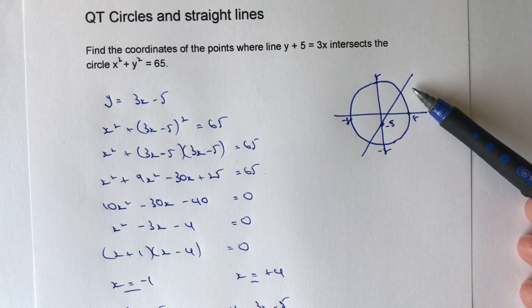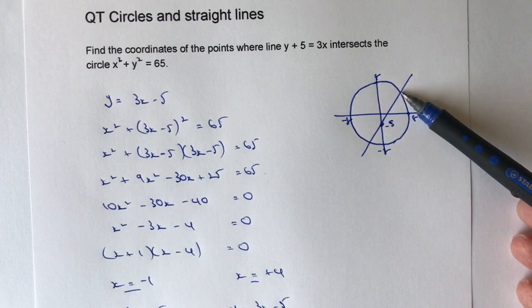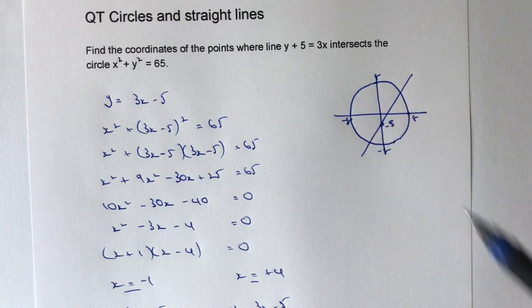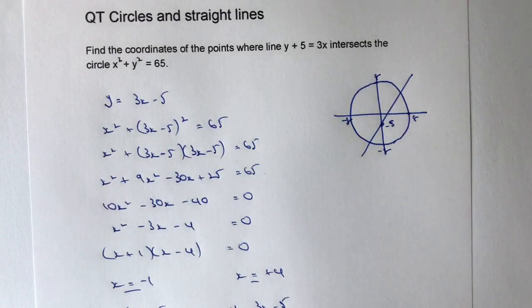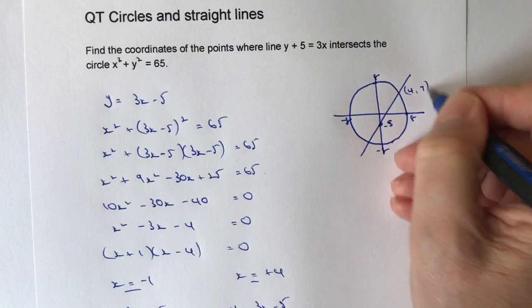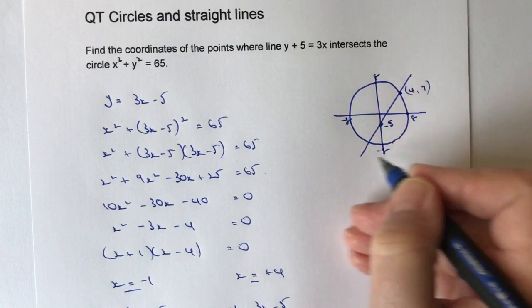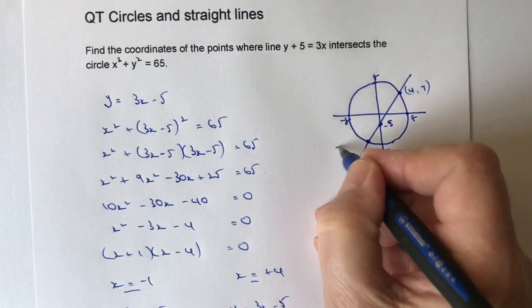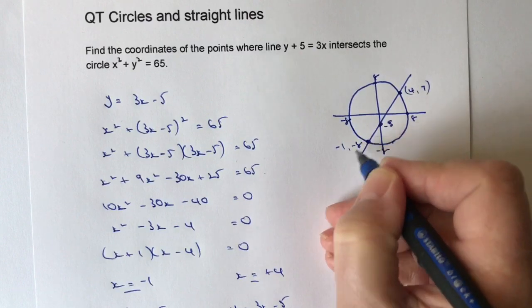And it's where it crosses the circumference of the circle. So we've got now two coordinates, one of which is going to be 4, 7, and that's going to be that point there. And then the other one is going to be minus 1, minus 8.